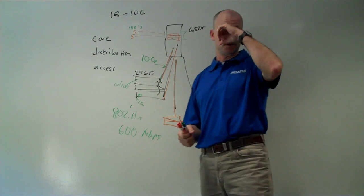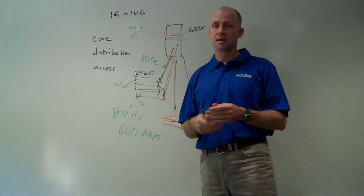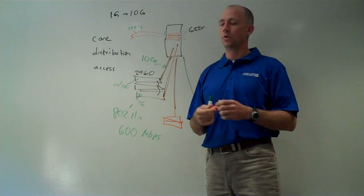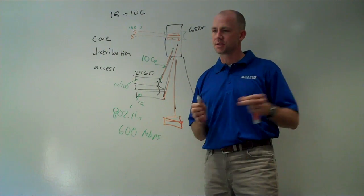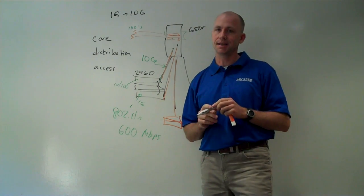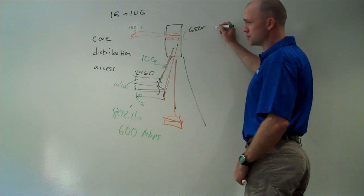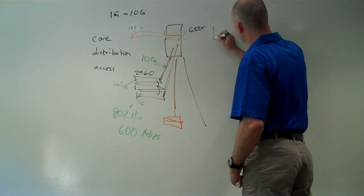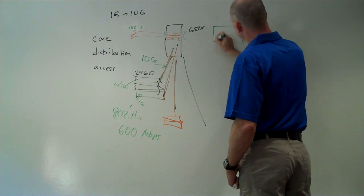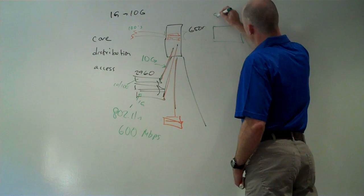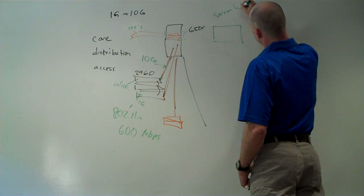And all that connection for storage happens either with a fiber channel, storage area network, or with iSCSI, and that's typically in a dedicated Ethernet network environment. But it's all at layer 2, so there's no real layer 3 switching environment.